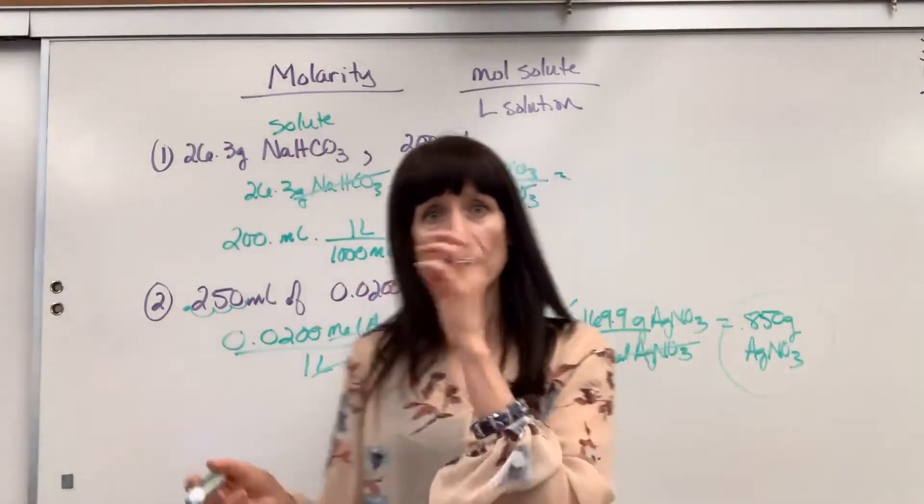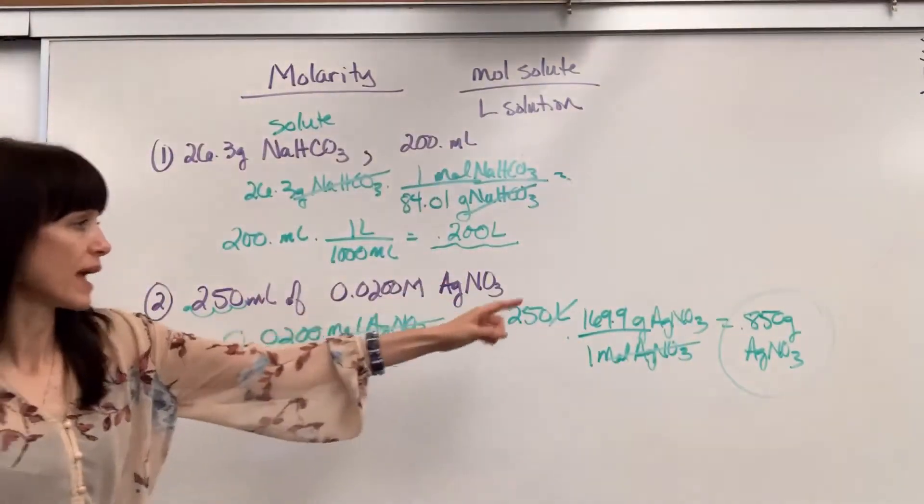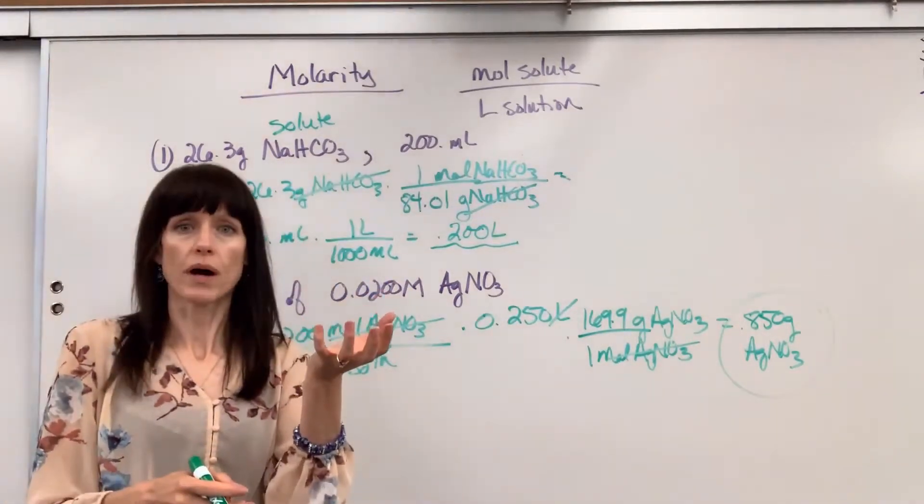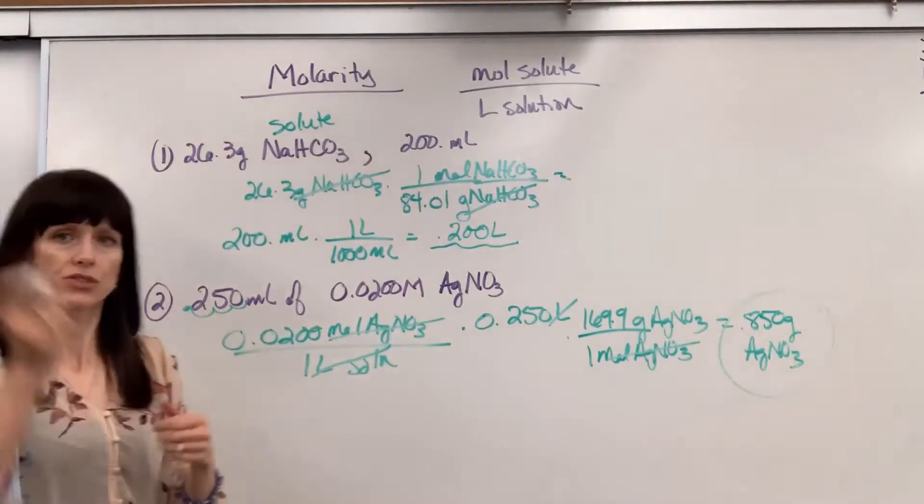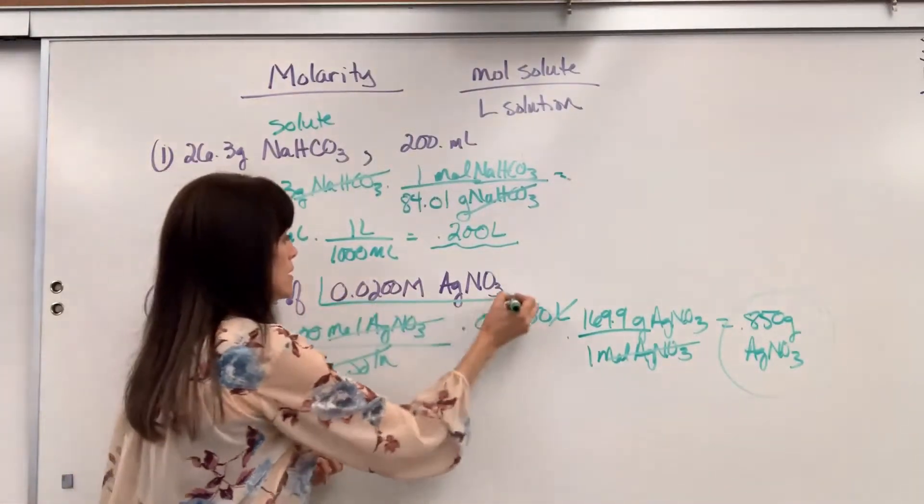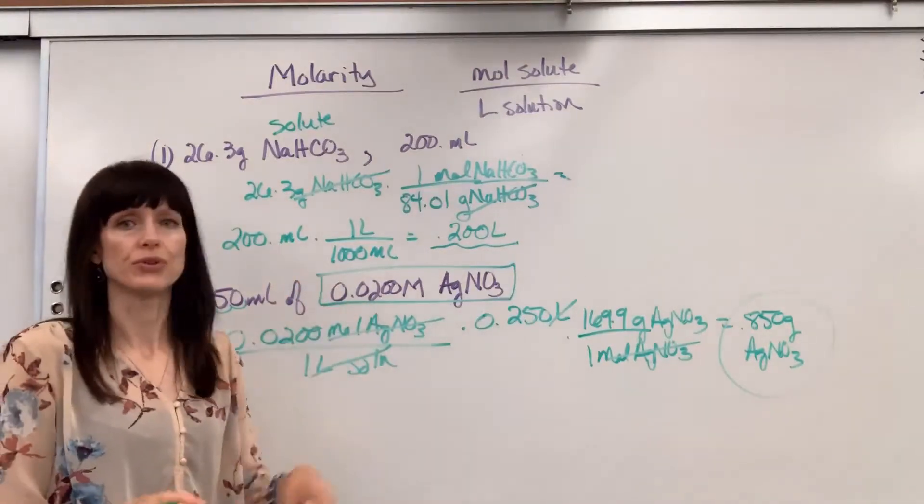So if I take 0.850 grams of silver nitrate, put it in water, fill the water up to 250 mils, shake that up. Guess what? The final concentration is going to be 0.02 molar.